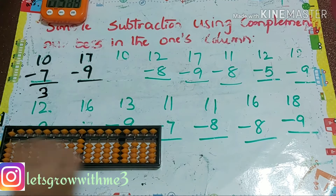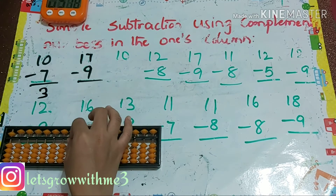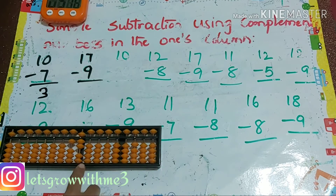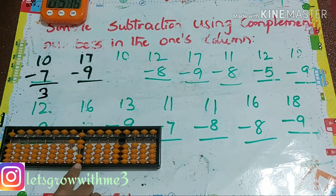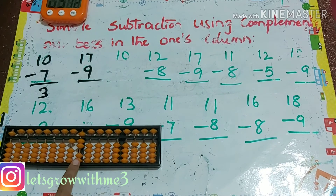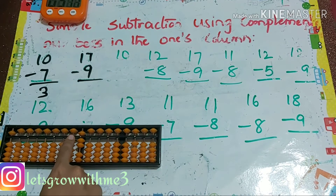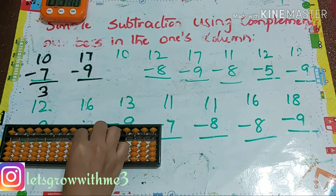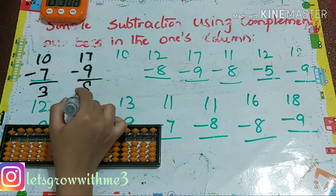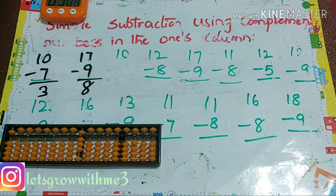17 minus 9: how to do minus 9? Minus 10 plus 1. We can't do it in the ones place so I'm doing it in the tens place — minus 10 plus 1. Our answer is 8.